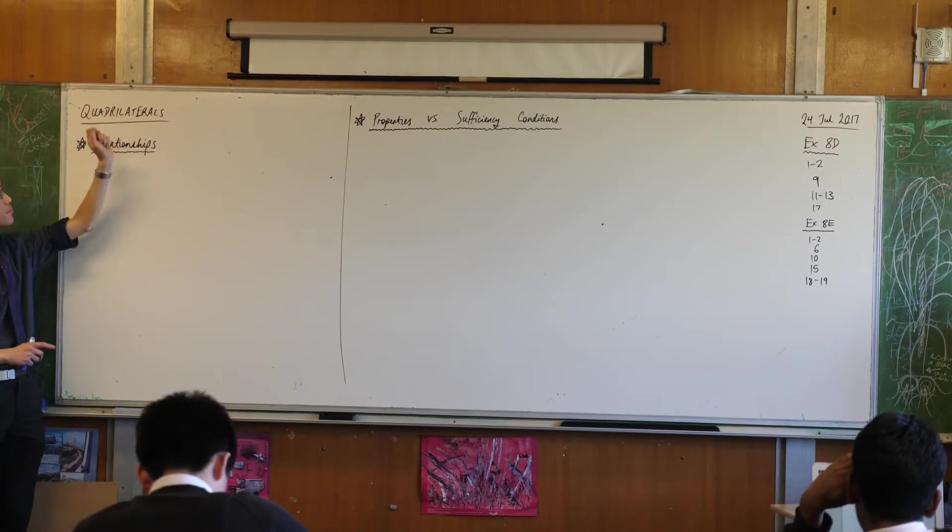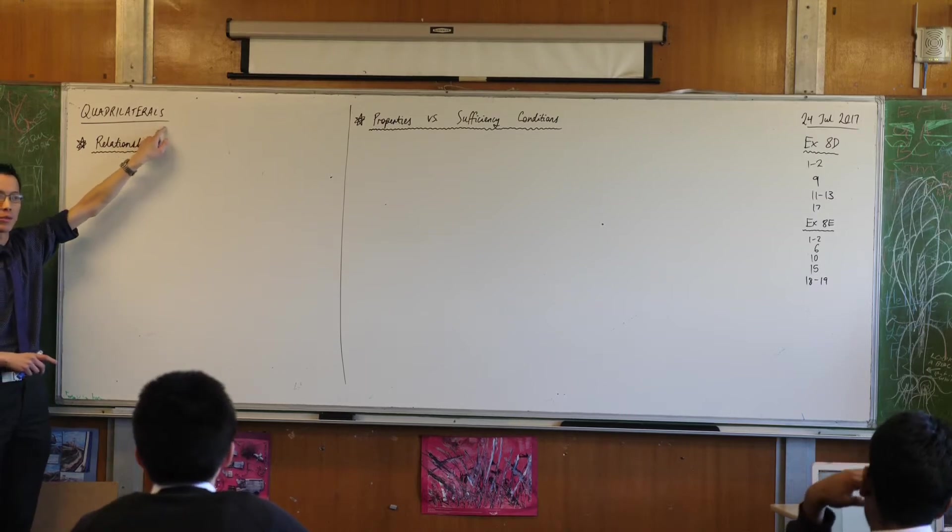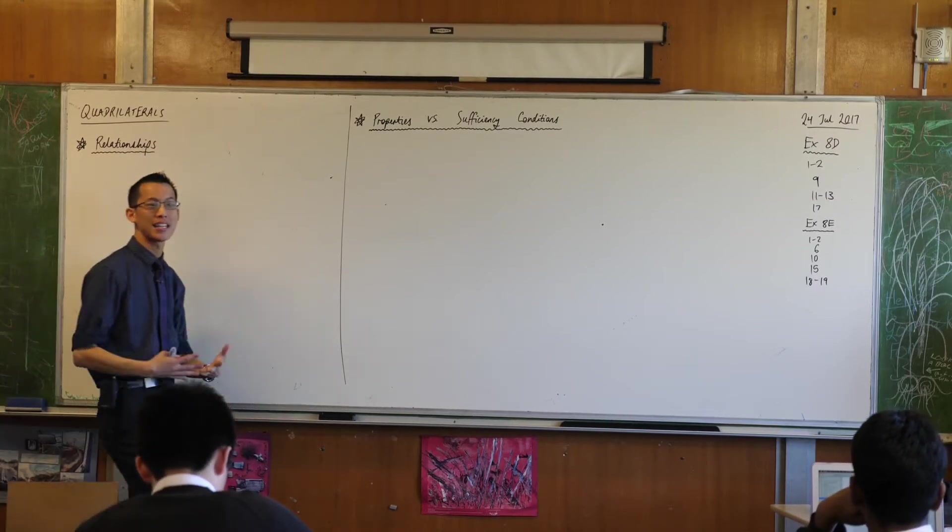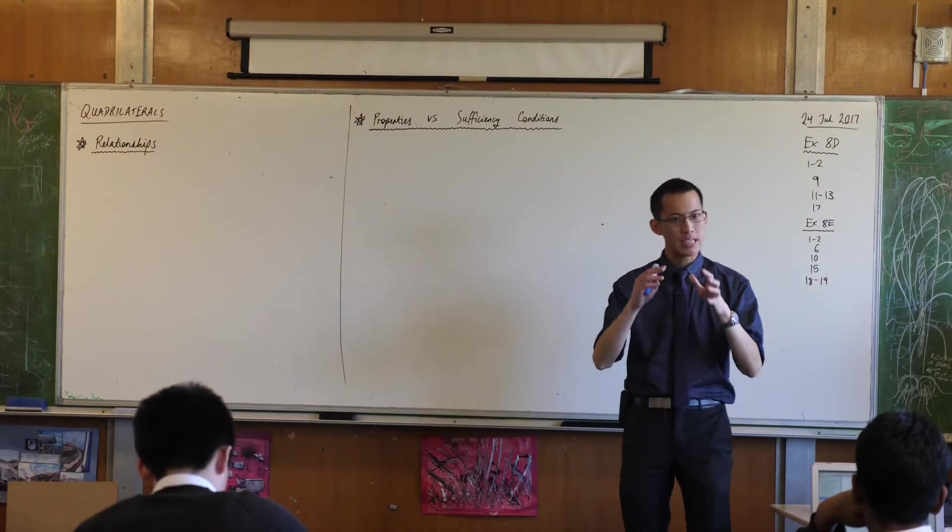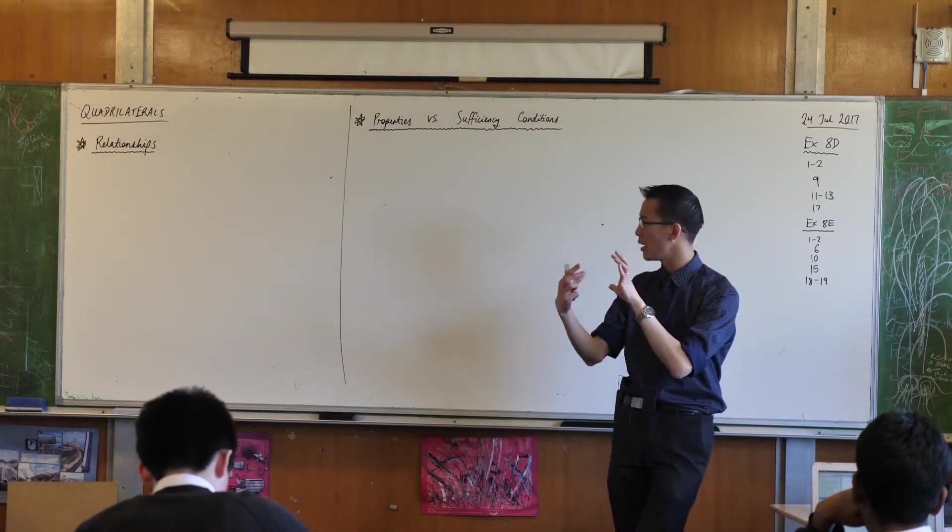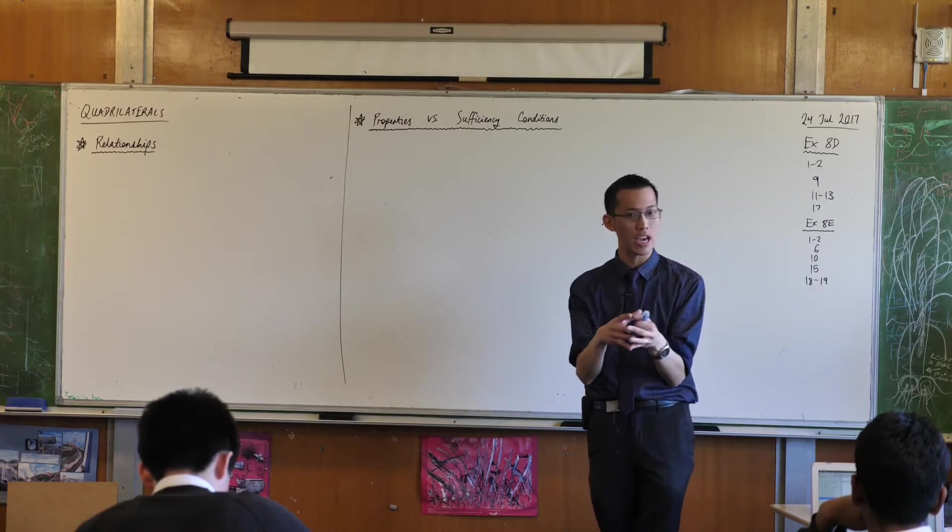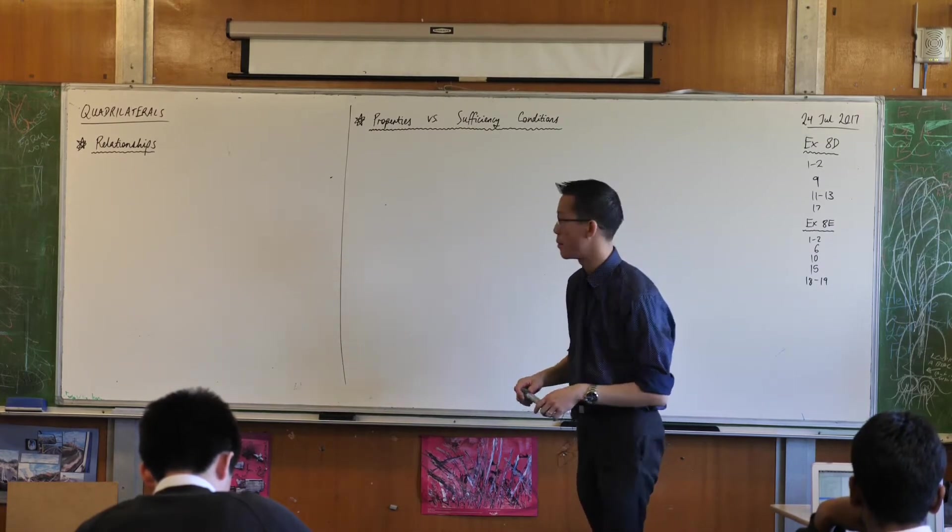So here's the first thing I want to do. You know lots of quadrilaterals, you know lots of different kinds of special quadrilaterals. One of the things you might not have thought about before is that they're related together in a non-trivial way. The relationships between these shapes help you understand the shapes a little bit better.